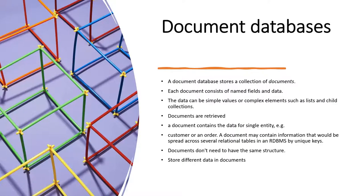Document databases are one of the most important modern database types. A document database consists of documents, which have fields and data. Values can be stored in simple or nested formats. Documents are retrieved using APIs. A document contains data for a single entity — for example, a customer with an order, and that order may have some details.